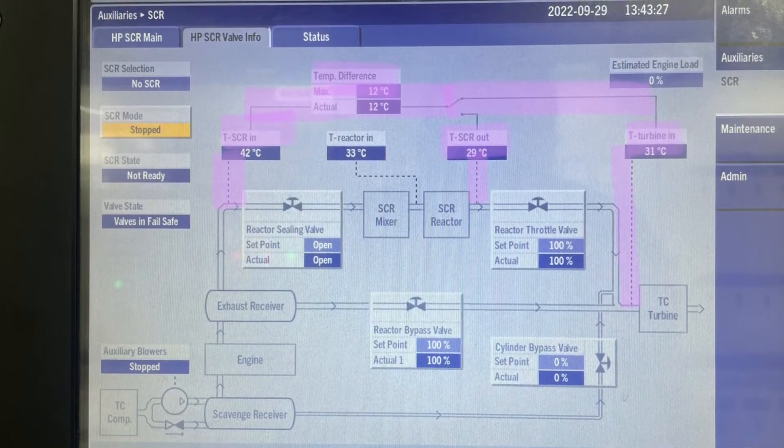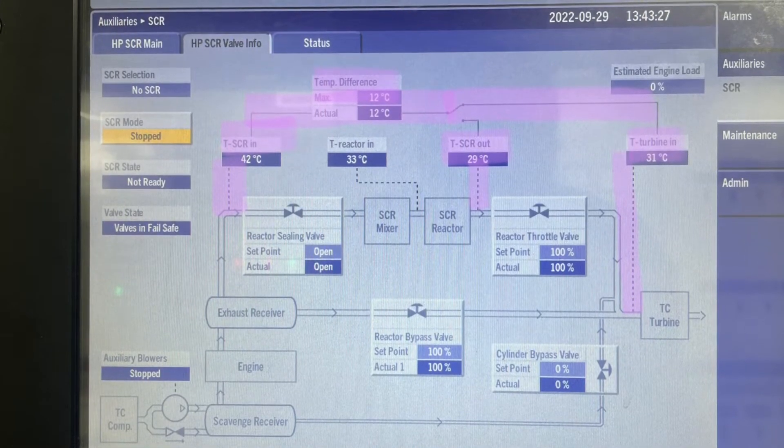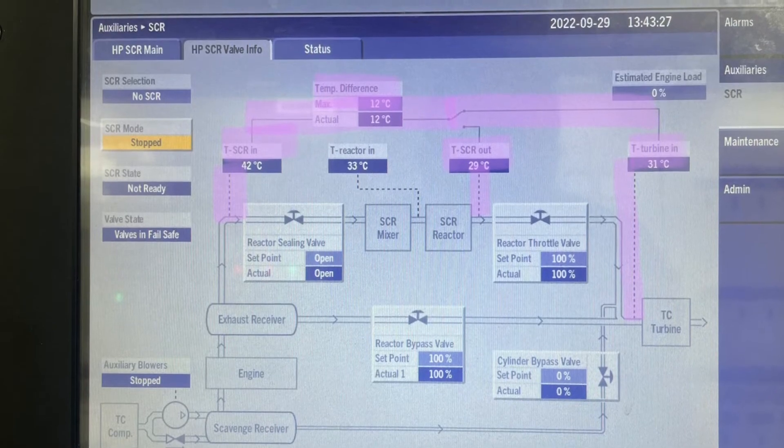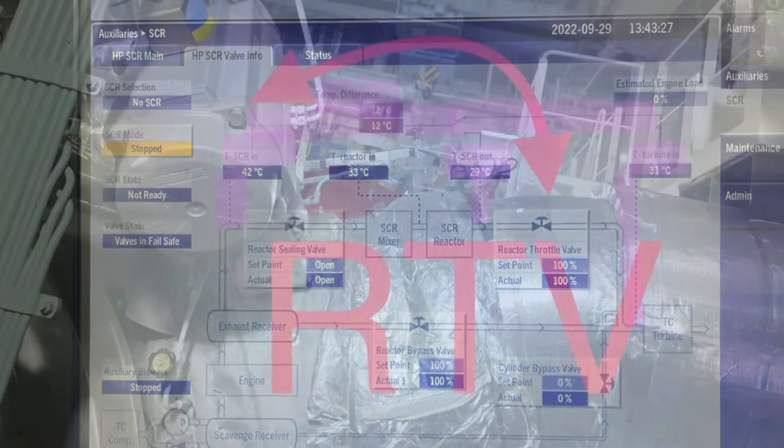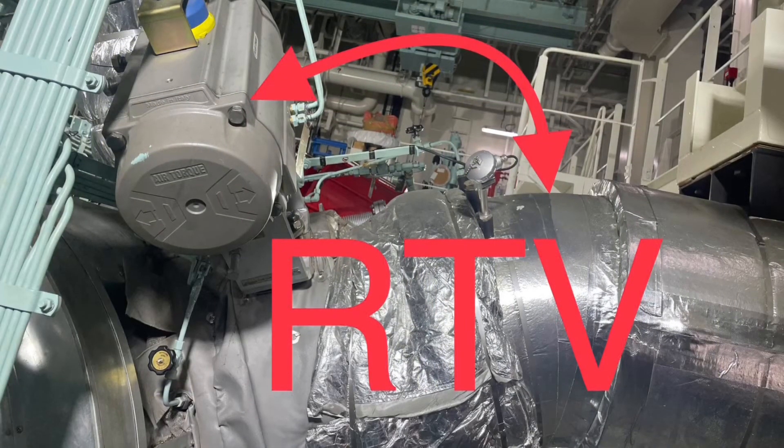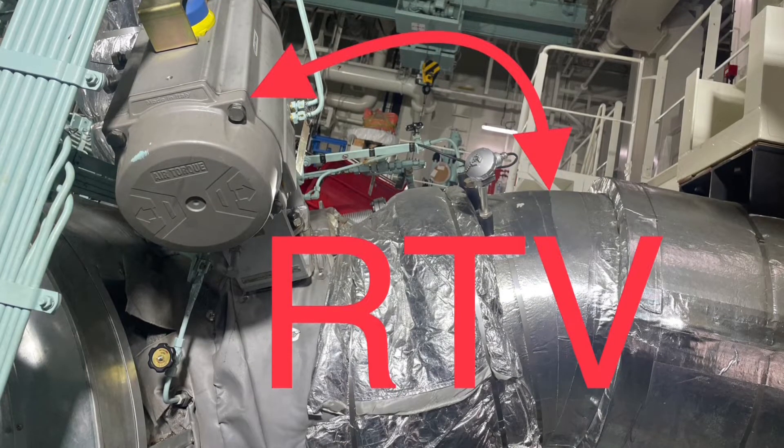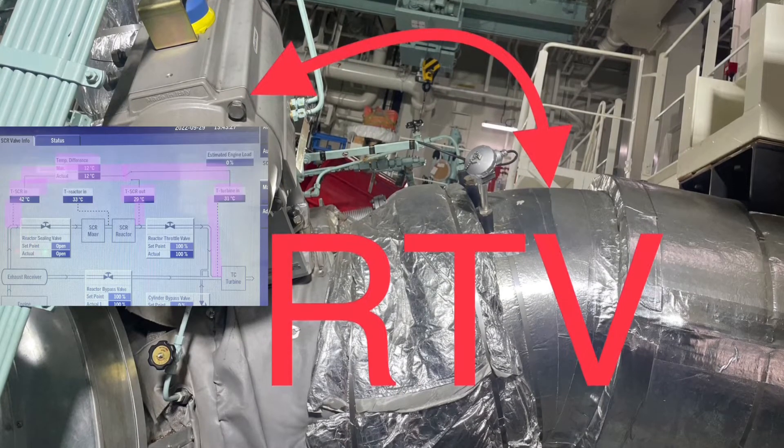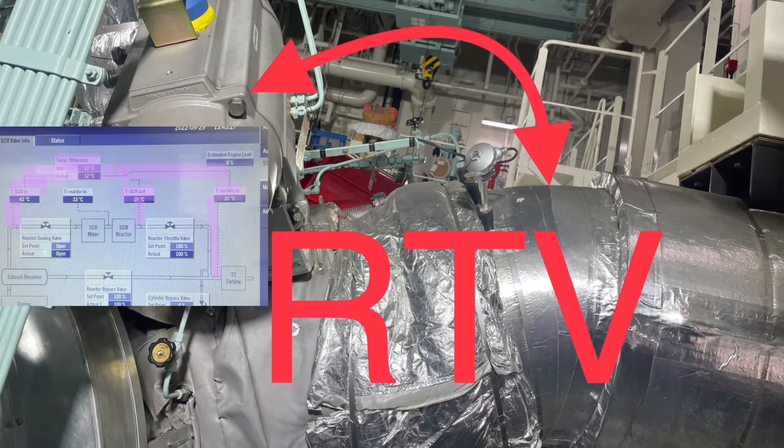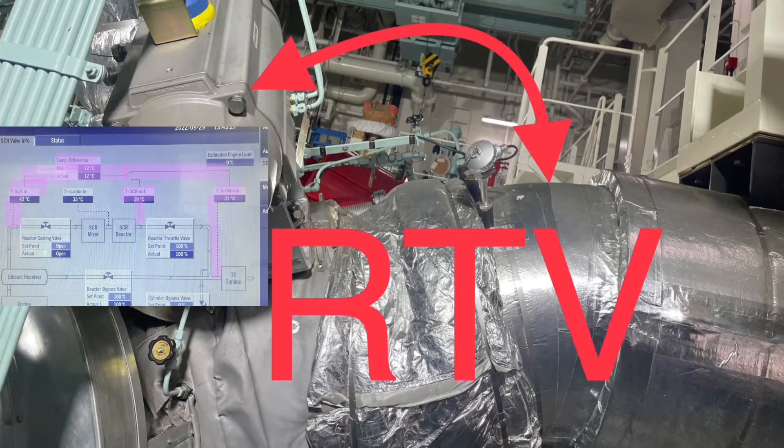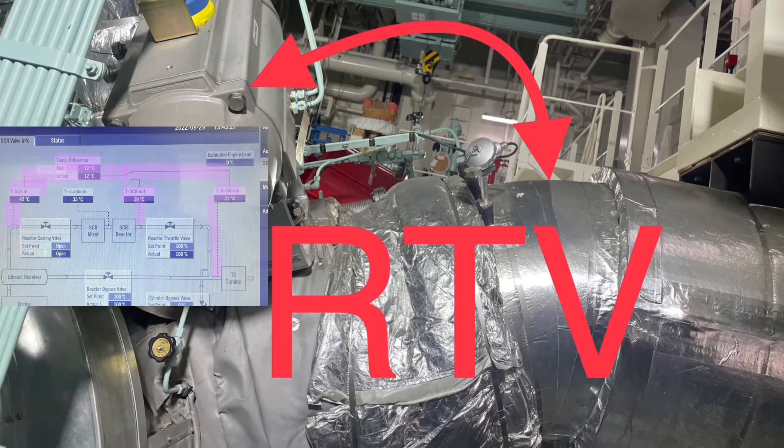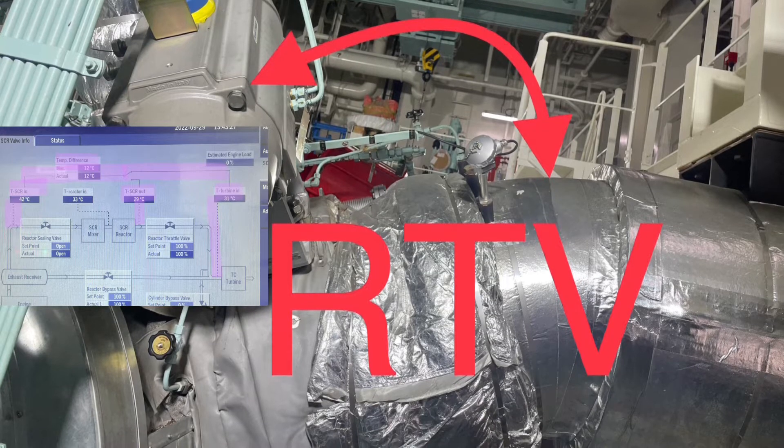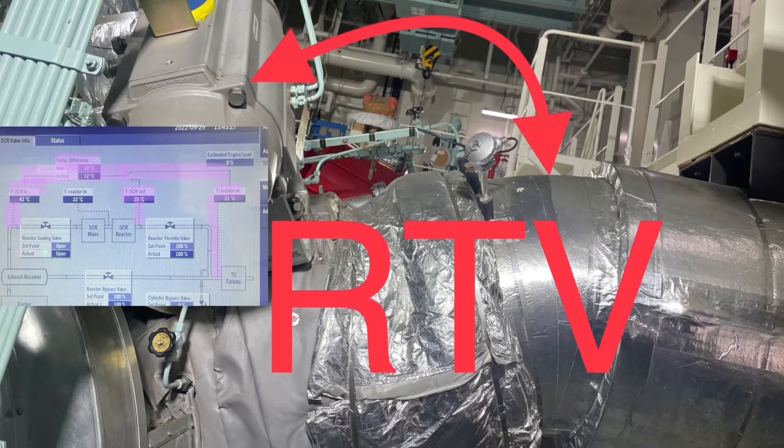The maximum acceptable temperature difference is shown on the valve information screen on MOP together with actual temperature difference. This valve control always ensures that only an acceptable part of exhaust gas energy is used to heat up the SCR reactor instead of being used to power the turbocharger.